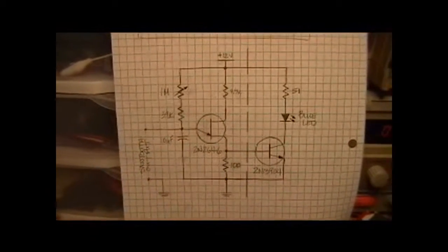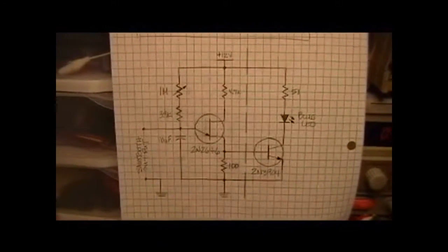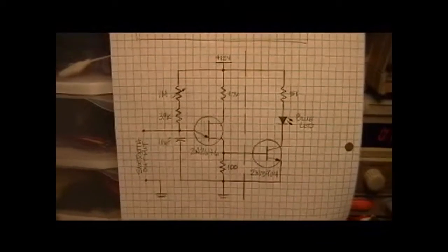So basically the unijunction transistor is doing the bulk of the work, simply waiting for the cap to charge to a certain point and then discharging it, starting the process all over again.